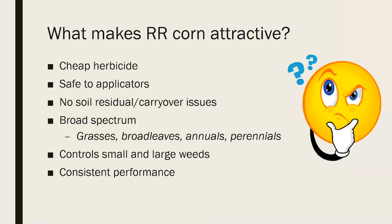In the olden days, when it came to weed management in corn, we relied really heavily on pre-emergent herbicides. Atrazine was the standard for a long, long time along with other soil-applied herbicides. And then in 1996, Roundup Ready corn came onto the market and has really become the dominant feature of the corn market. The reason Roundup Ready corn has been so attractive is it's a really cheap herbicide — economical. It's about the safest herbicide on the planet to applicators. There's no soil residual or carryover to worry about. It's broad spectrum, controlling virtually any weed species — annuals, perennials, grasses, or broadleaves. It works on large and small weeds and gives very consistent performance year to year.